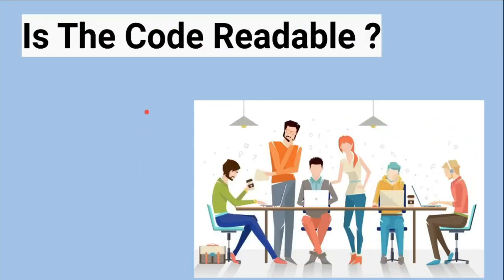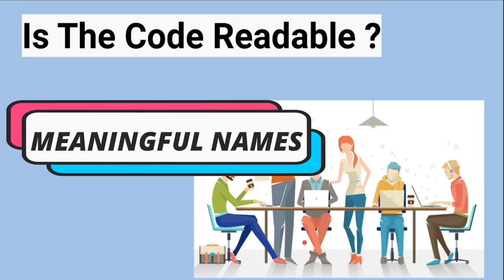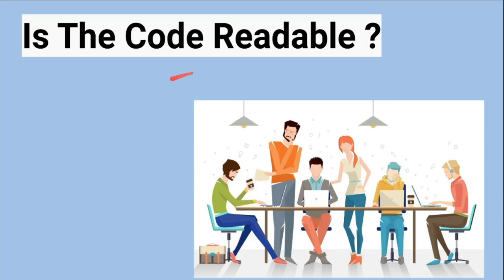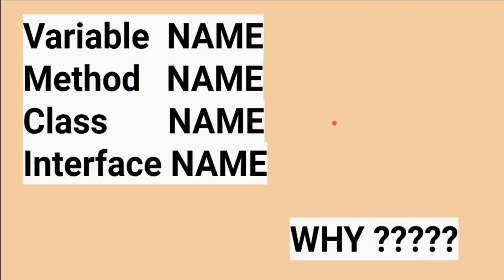Let's see clean code tips one by one. The first one: while writing or reviewing code, please ask this question — is the code readable? Is the code understandable? Whenever you're writing or reviewing the code, ask whether any other developer on the team, or at a later point in time, can understand this code. Meaningful names are very important for your project, and code readability is very important.